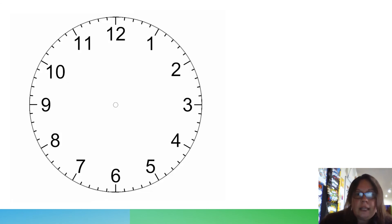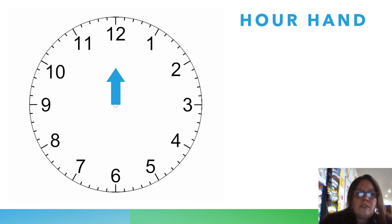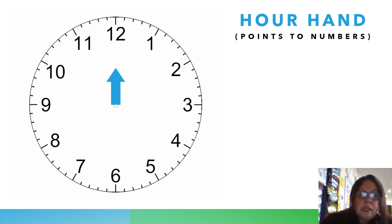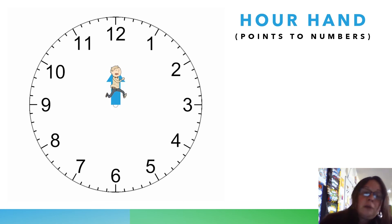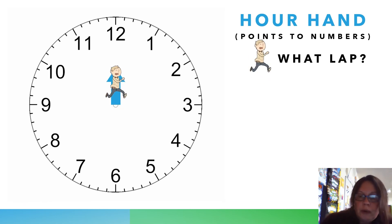Our next slide talks about the hour hand. The hour hand is the short hand on the clock — and this is called an analog clock, in case you're wondering. It's harder and harder to find these now, but you should know how to tell time on them. The hour hand represents the hour and points to the actual numbers on the clock. We like to represent it with a little guy running a race — we think of him as which lap he's on. He's not going super fast, like a cross-country runner, just saying which lap he's on.